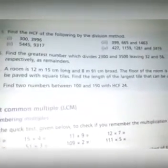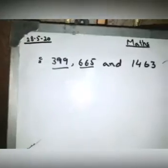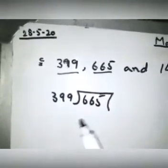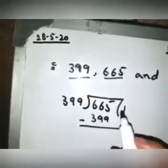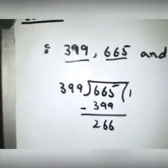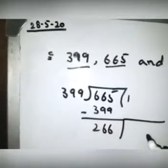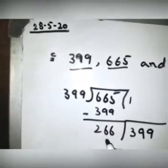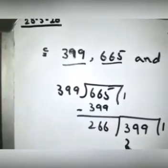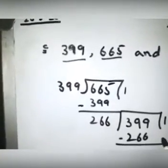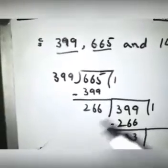Now look at part 2. Part 3 has three values, so you have to solve the first two values first. When you divide: 399 times 1 is 399. Now subtract this value from 665 — the answer will be 266. Since 266 is less than 399, so 399 will come here and you divide 399 by 266.